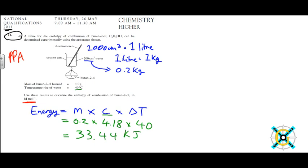So working that out, we get the energy which is equal to 33.44 kilojoules. That's how much energy is given to the water to make it rise that temperature.